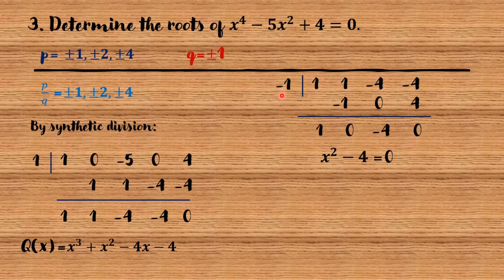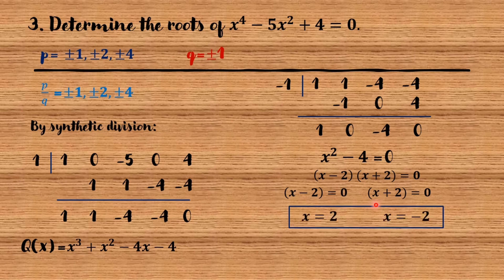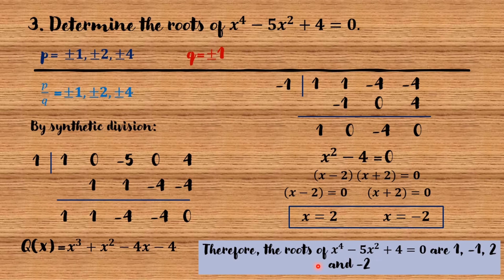Equate the remaining q of x to 0. We have x squared minus 4 equals 0. Factoring gives x minus 2 times x plus 2. Setting each factor to 0: x minus 2 equals 0 gives x equals 2, and x plus 2 equals 0 gives x equals negative 2. Therefore, the roots of x raised to the 4th minus 5x squared plus 4 equals 0 are 1, negative 1, 2, and negative 2.